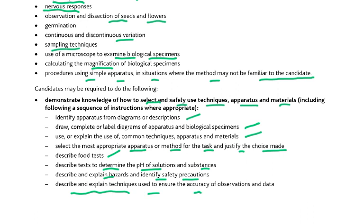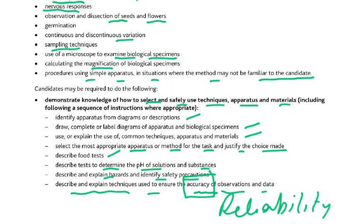Describe and explain hazards and identify safety precautions. Describe and explain techniques used to ensure the accuracy of observations. Accuracy is something different from reliability — they are two different words. For reliability, we say repeat the experiment: R for reliability, R for repeat. But accuracy is something else — I will be talking to you about accuracy. You must Google it and see what accuracy means.